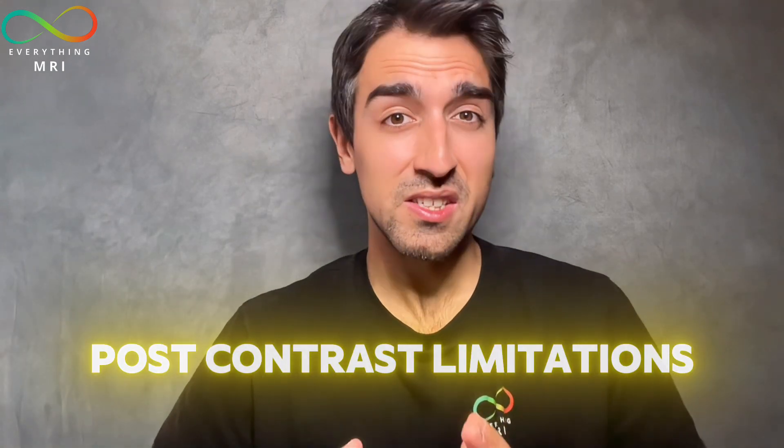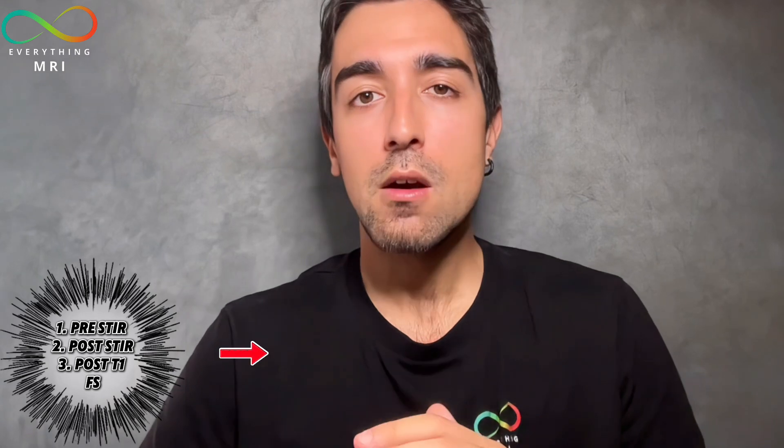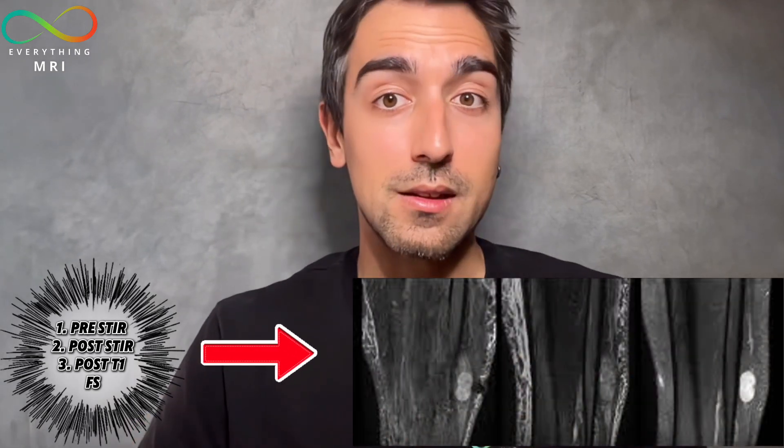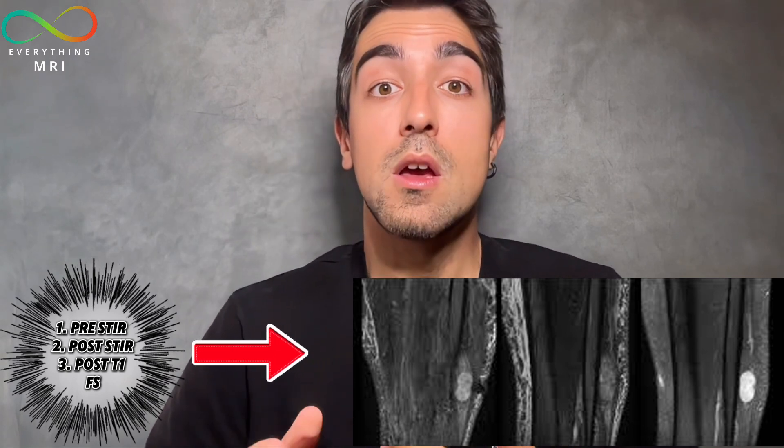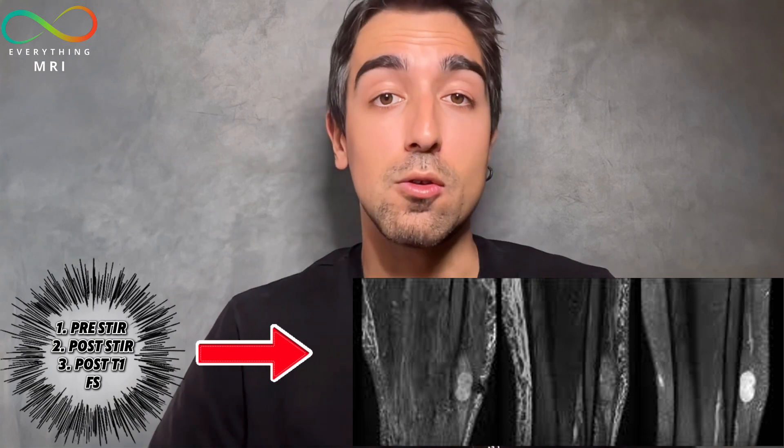Finally, another pitfall of inversion recovery is that some sequences cannot suppress specific tissues post-contrast injections. For instance, STIR does not specifically suppress fat — it nulls any tissue with a T1 similar to fat. Post-gadolinium injection, some enhanced tissues like tumors or inflamed areas might have shortened T1 values that overlap with those typical for fat. So we might accidentally suppress tissue structures that are relevant for the final diagnosis.